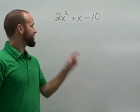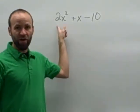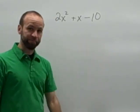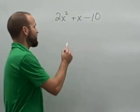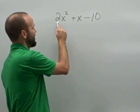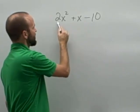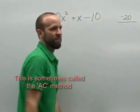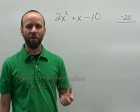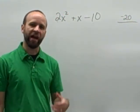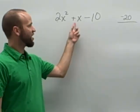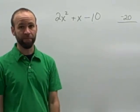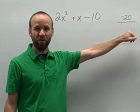Now, when your trinomial does not have a leading coefficient of 1, this is a little bit more work. Here the leading coefficient is 2. To factor this type of trinomial, our first step is to multiply the leading coefficient by the constant term. So in this case, I have 2 times negative 10, which is negative 20. We want to look at all the factor pairs of negative 20 and find the pair whose sum is the middle term. In this case, the middle coefficient is positive 1. Factor pairs of negative 20 means one positive and one negative.